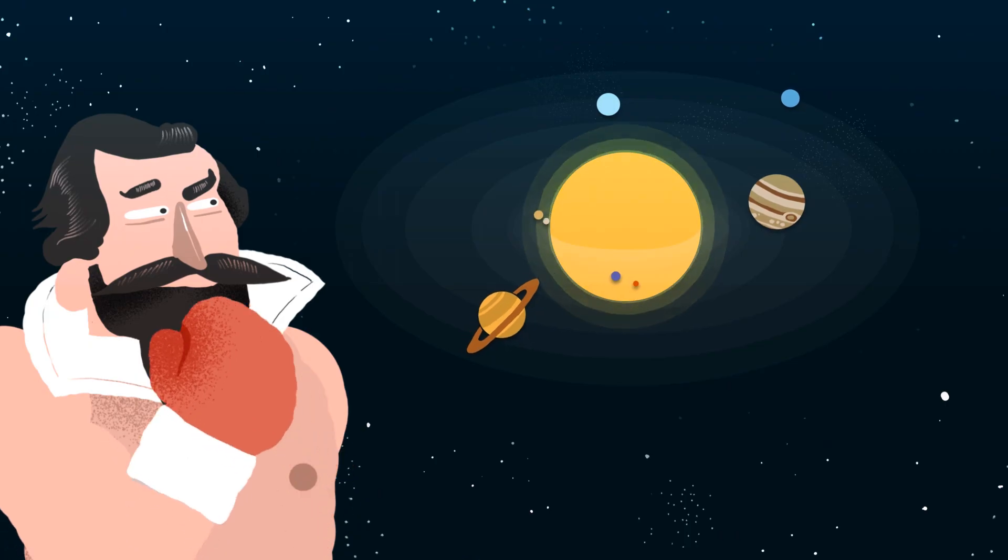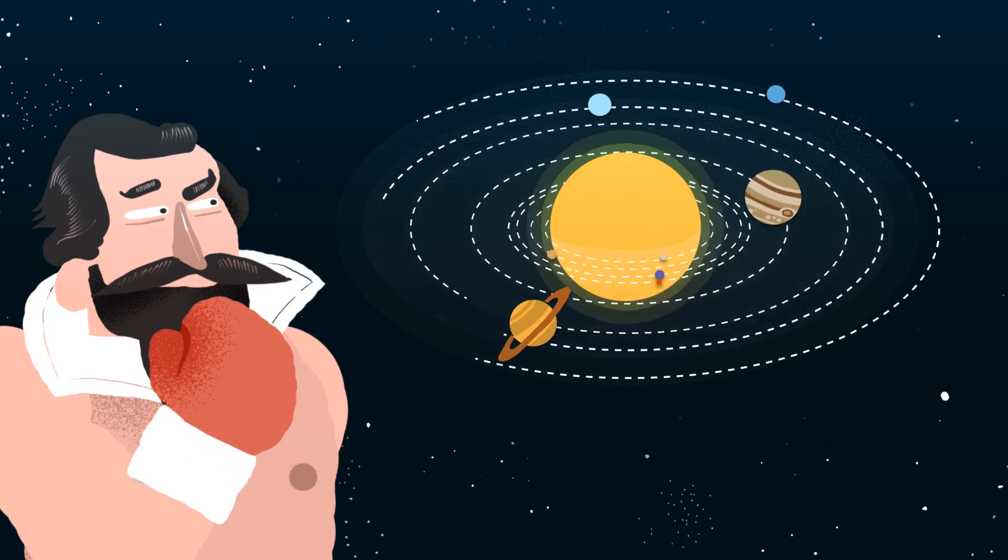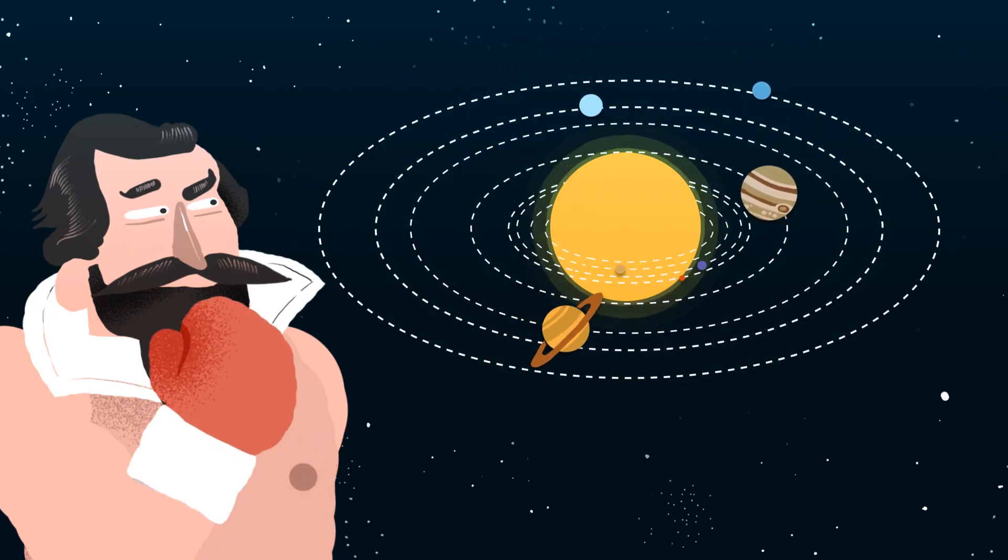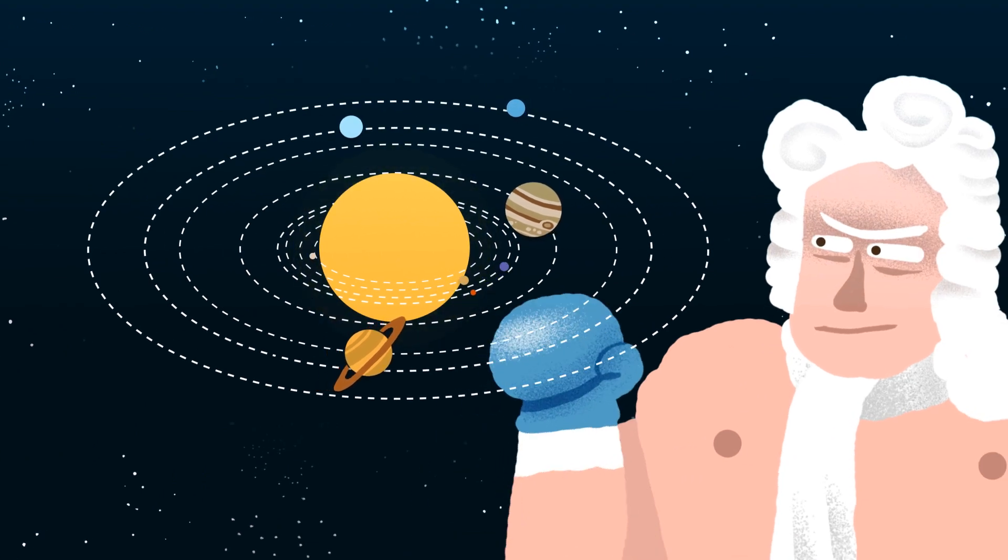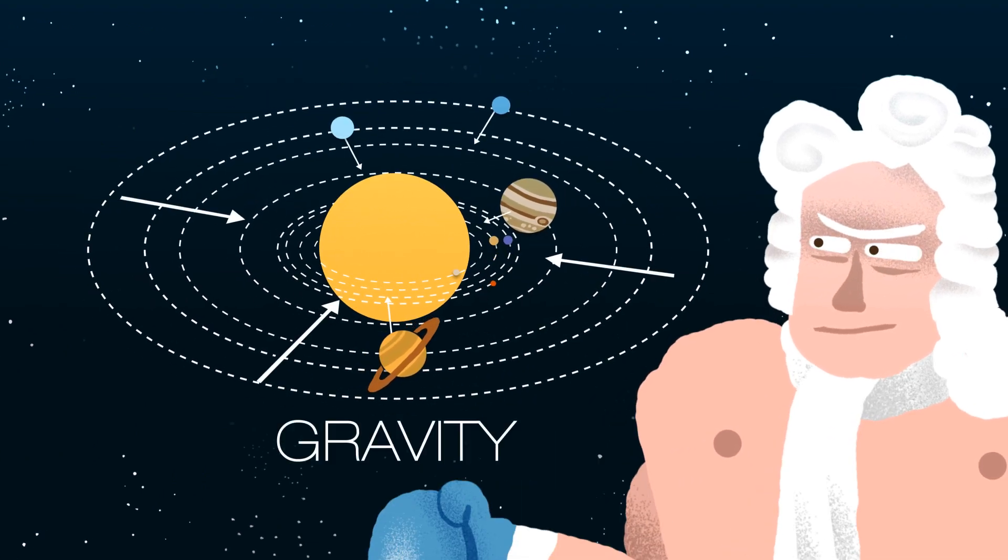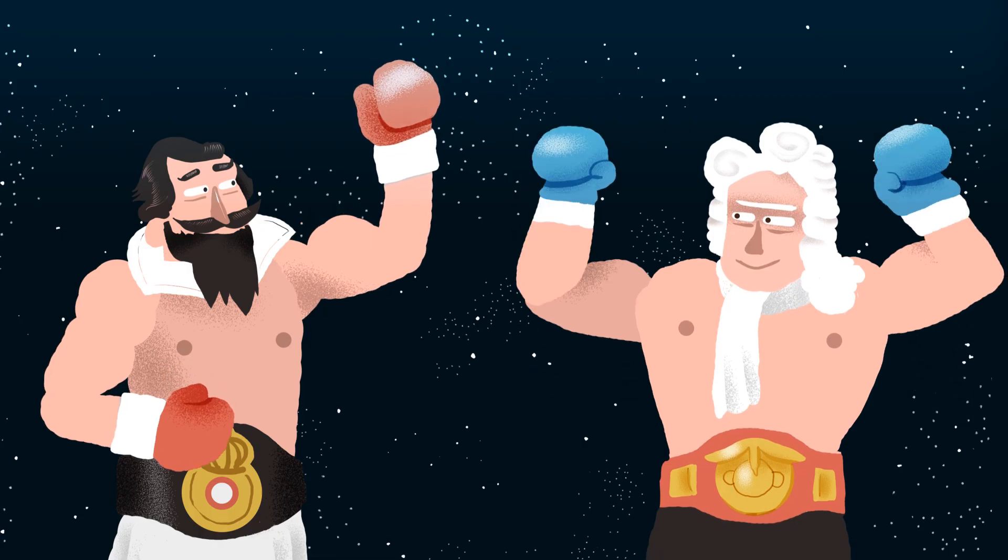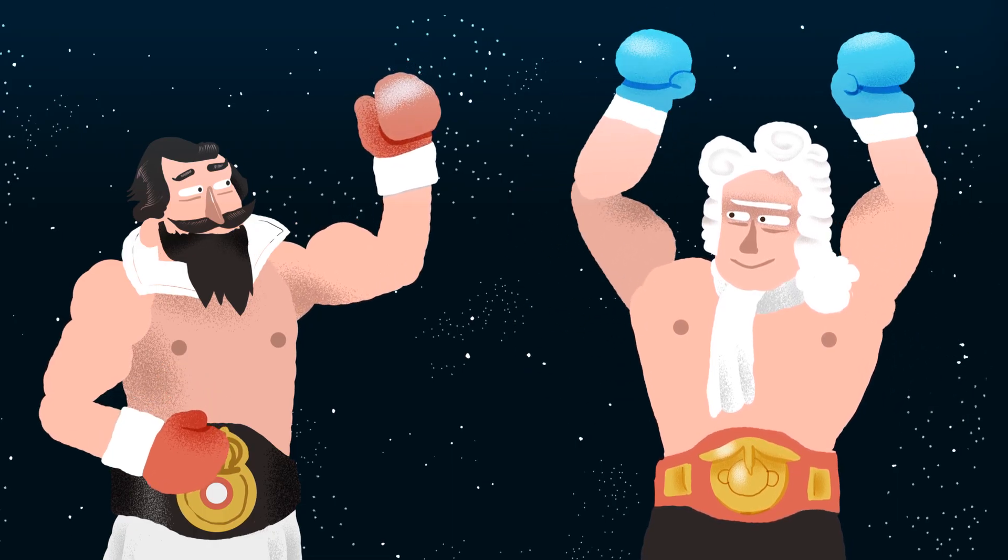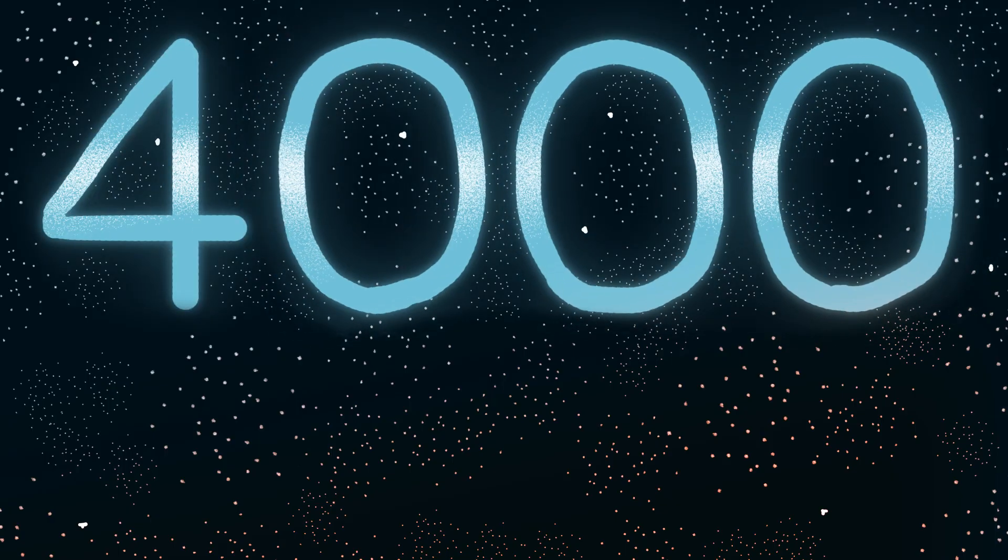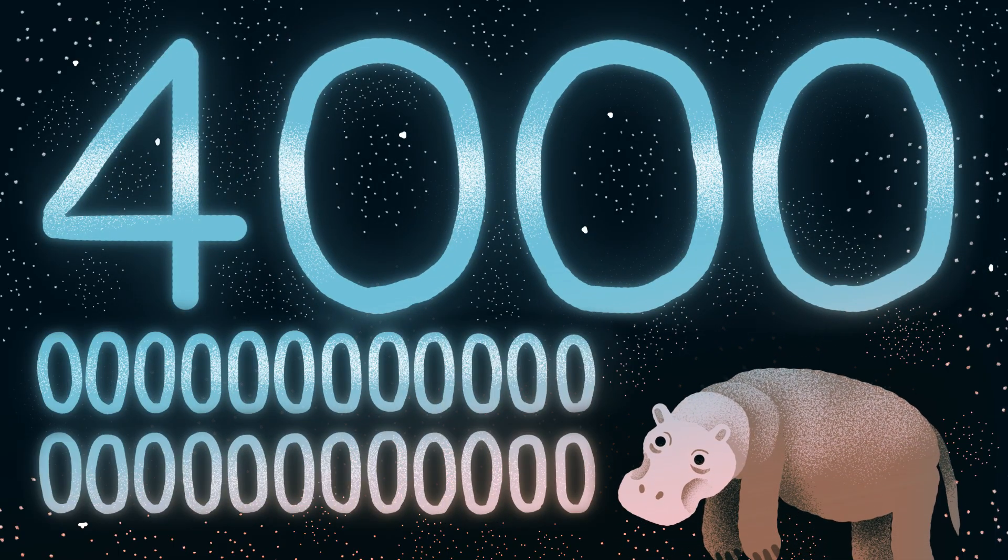Kepler studied the motions of the planets and didn't quite understand why they stayed in orbit around the Sun, until Newton came along 80 years later and formulated gravity. Using Kepler's laws and Newton's laws of gravitation, the mass of the Sun can be calculated as being equivalent to 4000 trillion trillion hippos!